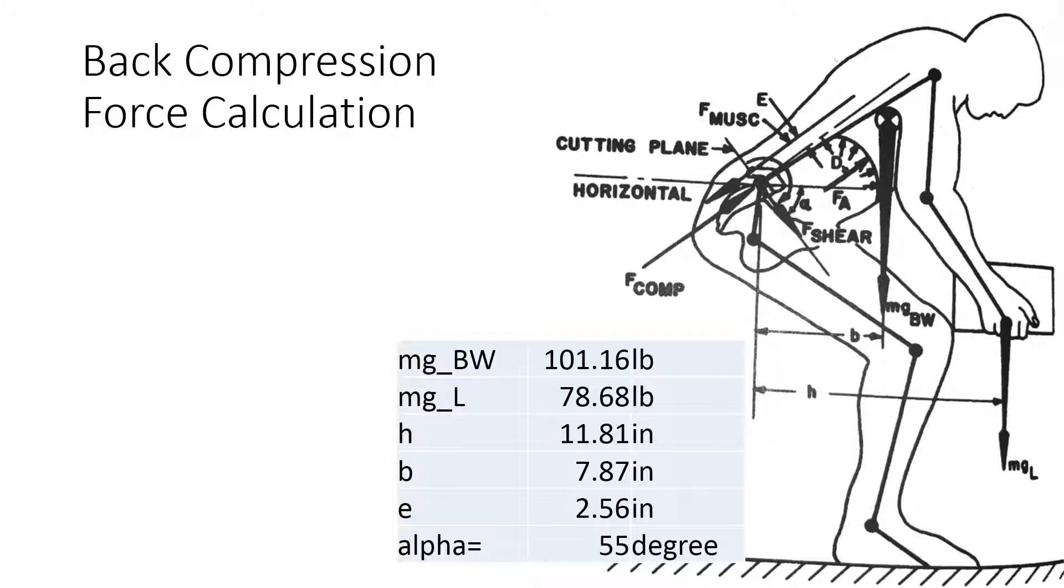In the previous video we have seen the total muscle force exerted by the erector spinae under this condition. I think this was calculated as 709 pounds. Now we want to see how much is the compression force.